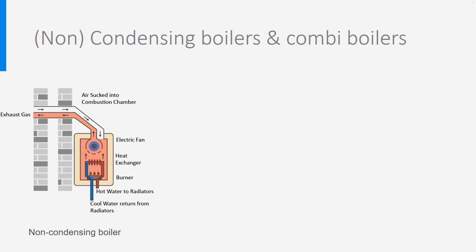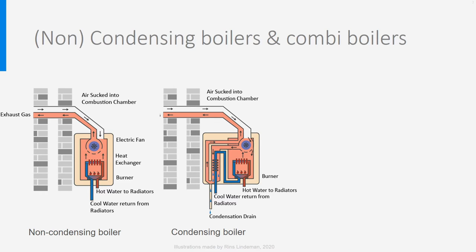In a condensing boiler, an additional heat exchanger is placed — here on the left of the burner — and the fumes, which contain a lot of water vapor, are directed to this heat exchanger. They give their heat to the cold return water before flowing outside. Not only the fumes give heat back — mainly the water vapor contained in the fumes gives latent energy that is released when the vapor cools down enough to condensate. These droplets of condensed water must be drained out through an additional pipe. With this condensation, much more heat is recovered from the burning process.